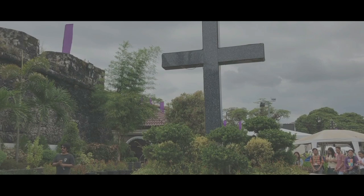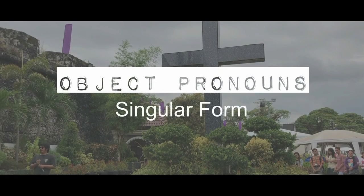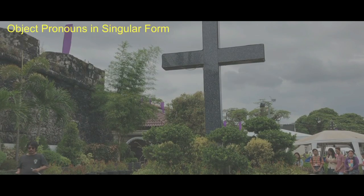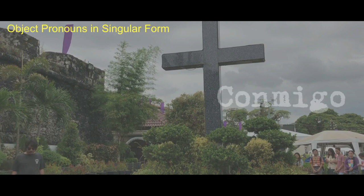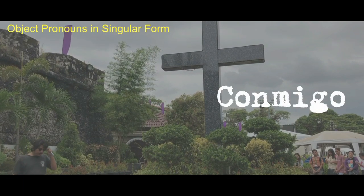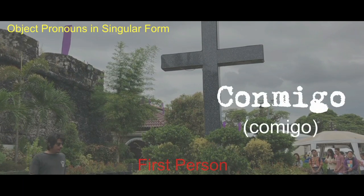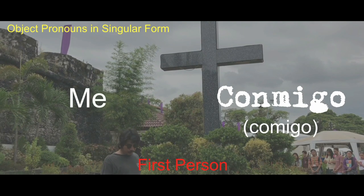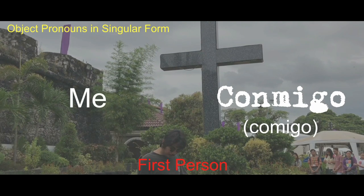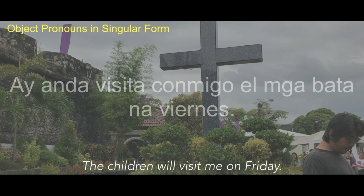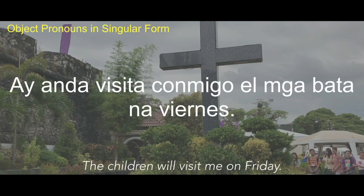We also have pronouns in the objective case. Conmigo — or you will sometimes hear this as Comigo — is our first person pronoun in object case. This means 'me.' Example: 'Ayanda visita comigo ang mga bata na viernes.'